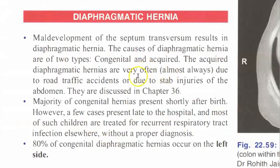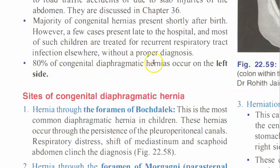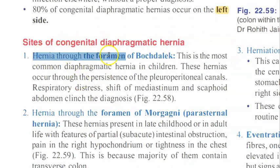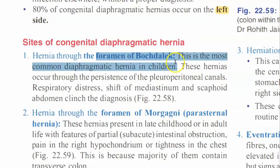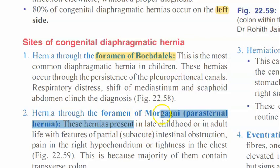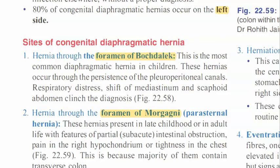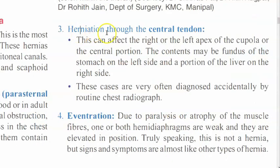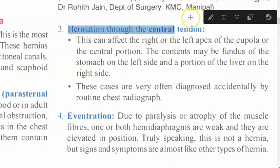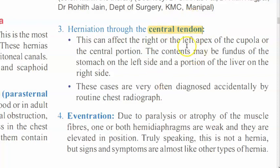There are both congenital and acquired diaphragmatic hernias. Most of these hernias are on the left side. The most common is hernia through the foramen of Bochdalek. There is also hernia through the foramen of Morgagni, which is a parasternal hernia, and herniation can also occur through the central tendon.